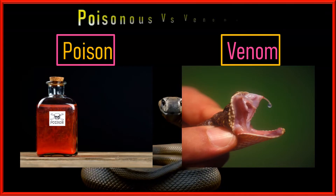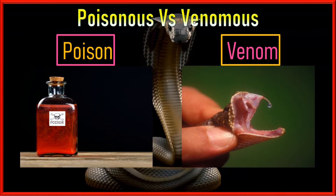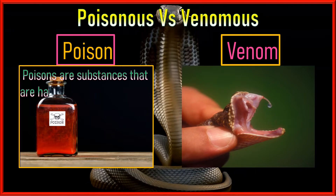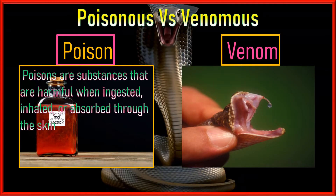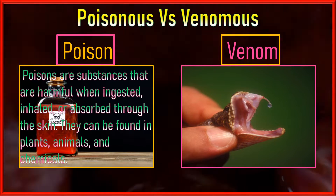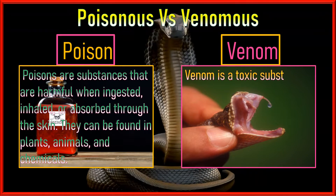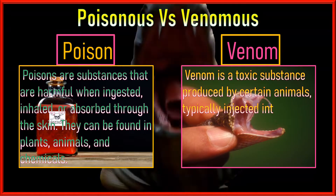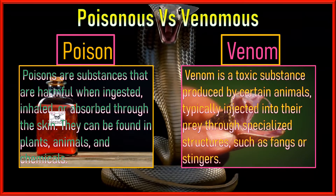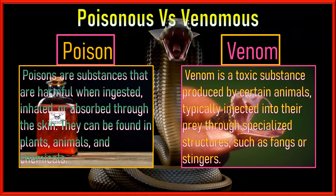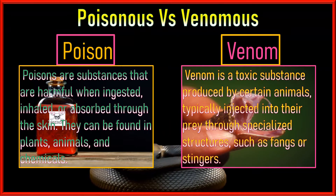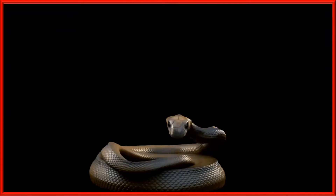Before moving further, let's revise our concept of poison and venom — which word is more suitable? Poisons are substances that are harmful when ingested, inhaled, or absorbed through the skin; they can be found in plants, animals, and chemicals. Venom is a toxic substance produced by certain animals, typically injected into prey through specialized structures such as fangs or stingers. So the more suitable term for snakes is venomous versus non-venomous.